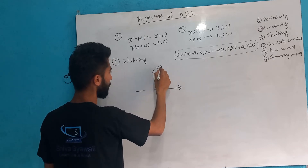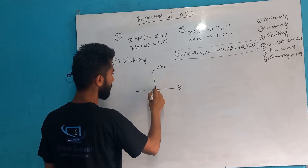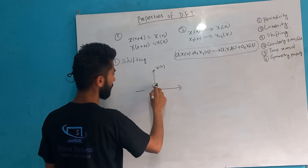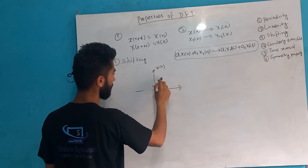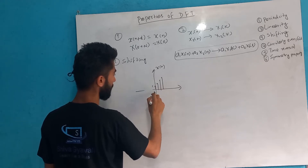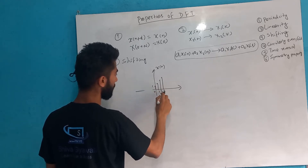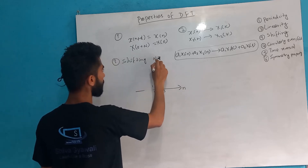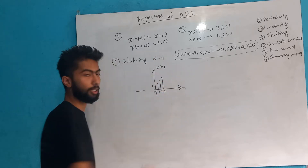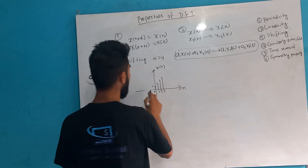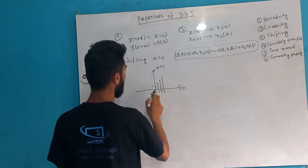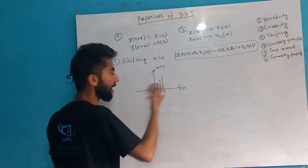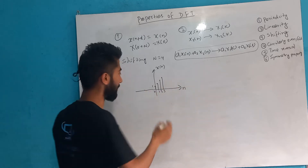So this is the action — this is 1, this is 2, this is 3, this is 4. Index 0, 1, 2, 3 — here we have 4. So let's do this: x[n minus 2].